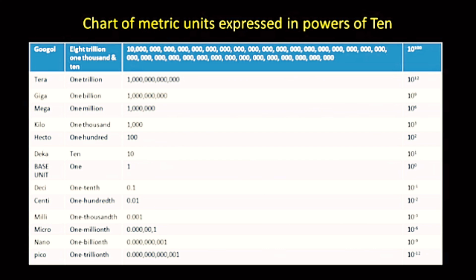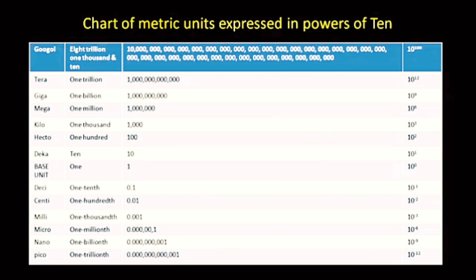We can have charts of metric units expressed in powers of 10: Google is 10 to the power 100, Terra is 10 to the power 12, Giga is 10 to the power 9. Likewise, hecto, deca, base unit, deci, centi, milli, micro, nano, and pico — pico is 10 to the power minus 12. We can have a chart like that in our mathematics resource room.